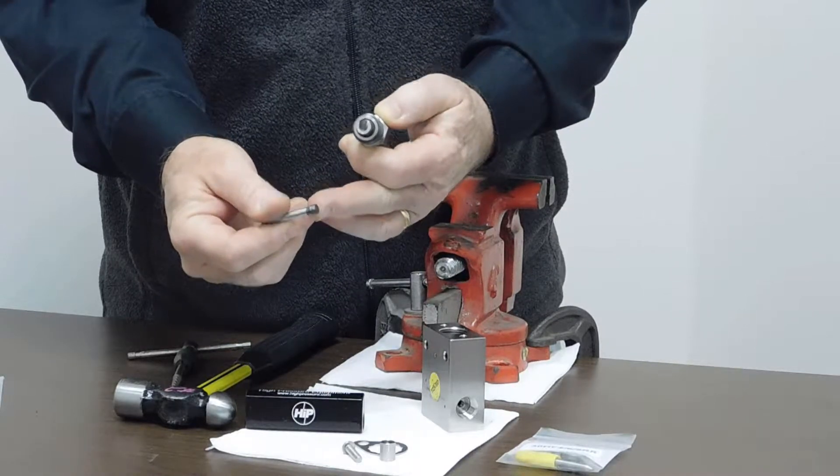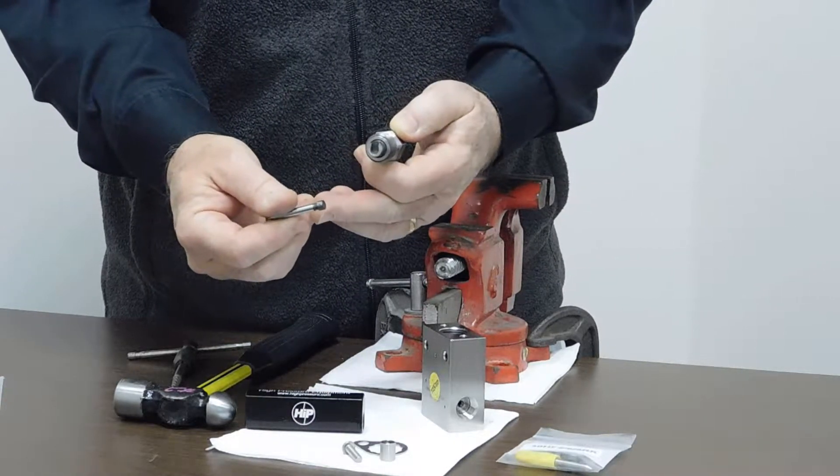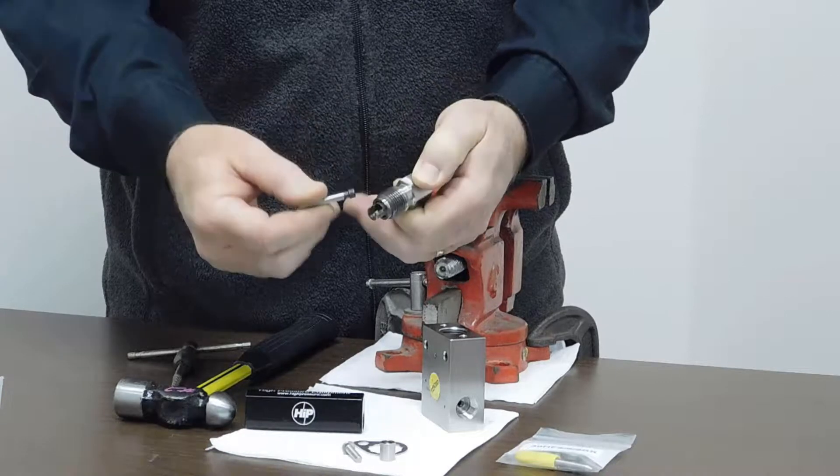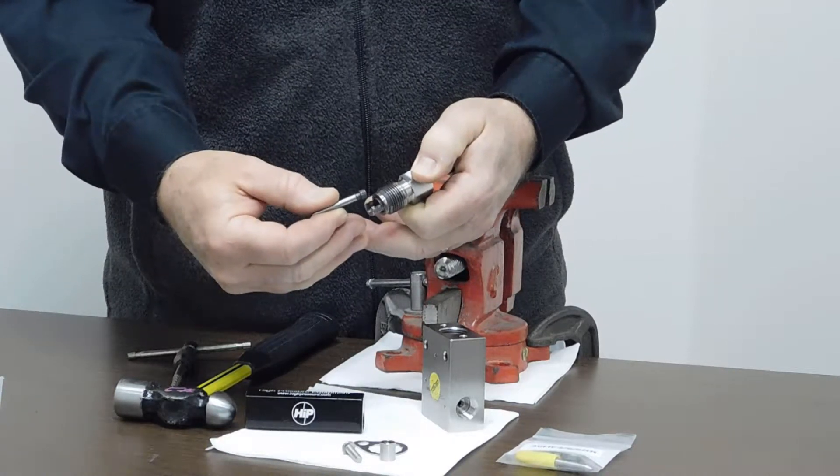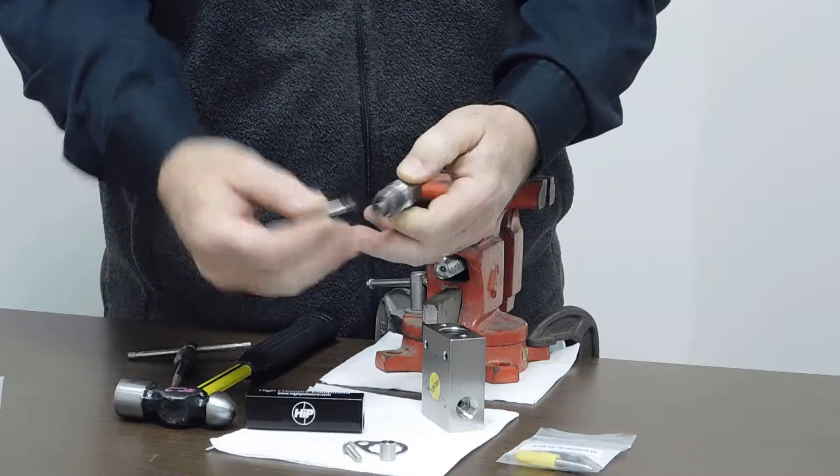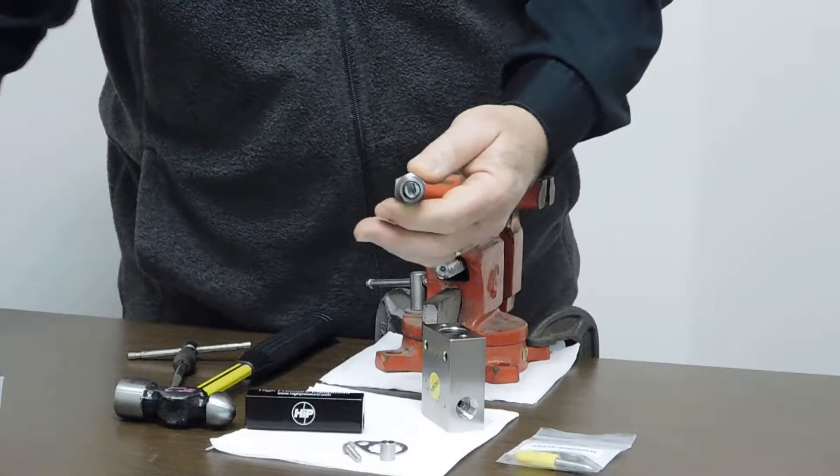The upper stem, or the upper part of the lower stem I should say, has some lubrication on it. What that does is it just reduces any of the friction while the valve and stem is rotating. So let's put that lower stem aside because we don't need that anymore.